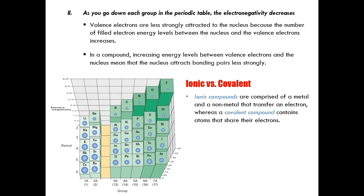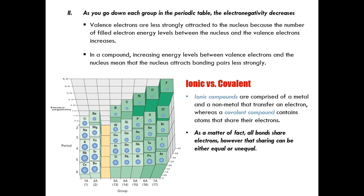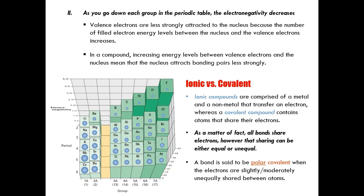So how does electronegativity specifically impact bonding? Before we get into that, let's go over some basics of ionic and covalent bonding. Ionic compounds are comprised of nonmetals and metals that transfer an electron, whereas covalent compounds contain atoms that share electrons. What people may not realize is that all bonds actually share electrons. However, the sharing can either be equal, unequal, or extremely unequal. This brings us to the concept of polarity. Polarity explains what we call polar covalent bonds, which are bonds that exist when electrons between atoms are slightly to moderately unequally shared.